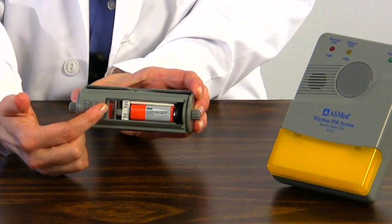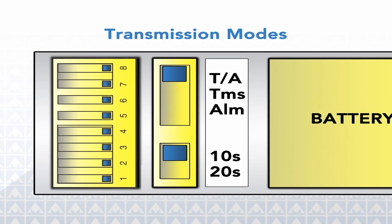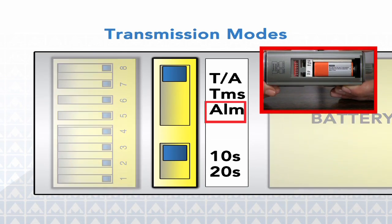Three choices can be made from the transmission mode using this selector switch. Choose alarm if you want only the alarm to sound with no signal sent to the remote receiver. Use this mode when using the PIR alarm alone.